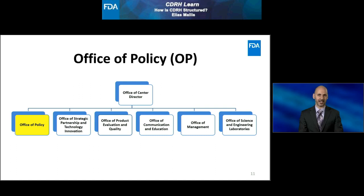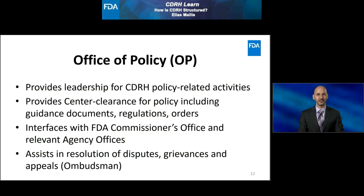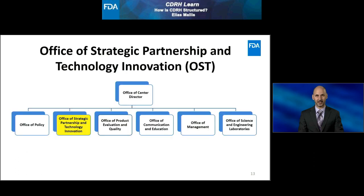Let's go back to our org chart and move down a level to review the offices that report to the Office of the Center Director. We'll move along our chart going from left to right, so we'll start with the Office of Policy, or OP. The Office of Policy provides leadership for CDRH policy-related activities. OP provides center clearance for various policy issued by the center, which includes guidance documents, regulations, and orders. This office interacts with the FDA Commissioner's Office and relevant agency offices on behalf of the center. The CDRH Ombudsman is located in OP and assists in resolving various disputes, grievances, and appeals for CDRH.